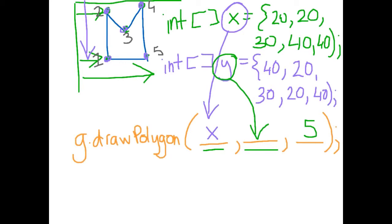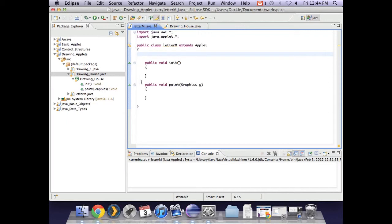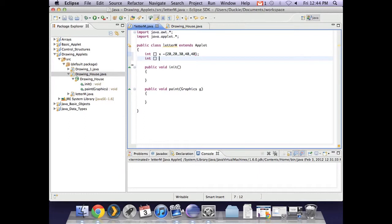So let's quickly go to Eclipse and code this example. So looking in Eclipse, I've just created a new class called the letter M, because that's the polygon we wanted to create. So what we looked at a moment ago was that we needed an integer array to contain all the x variables. And we gave them the values of, let me see, 20, 20, 30, 40, and 40. And then we created another integer array with all our y variables, and they had the values. They were 40, 20, 30, 20, 40.